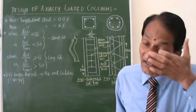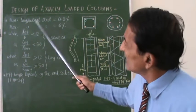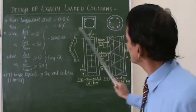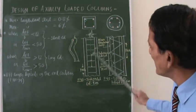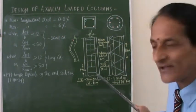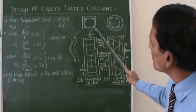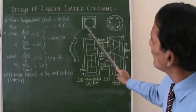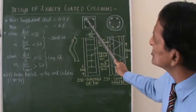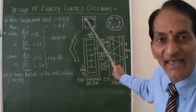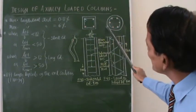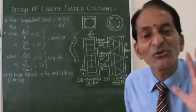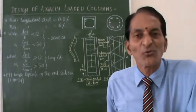Another important thing your IS code says: in the case of a square or rectangular column, four minimum longitudinal reinforcements should be there, and in case of a circular column, six longitudinal reinforcements should be there. This is your IS code specification.